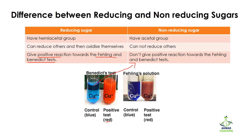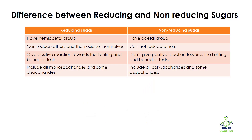Similarly, in Fehling's solution, the copper is converted and a red color is produced if a reducing sugar is present. If the blue color remains and no red color is produced, it means the sugar is a non-reducing sugar. Reducing sugars include monosaccharides and some disaccharides, while non-reducing sugars include polysaccharides and some disaccharides.